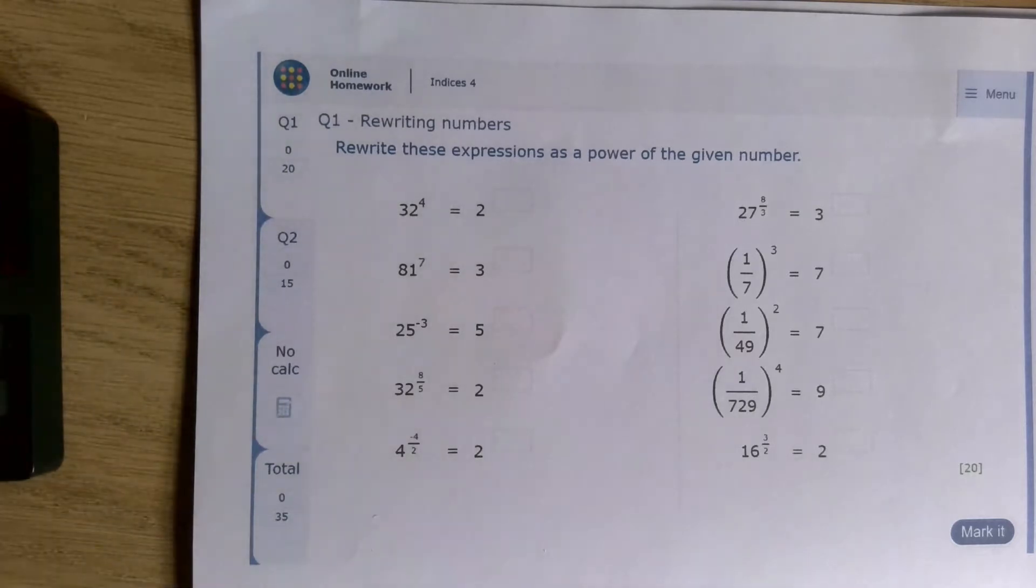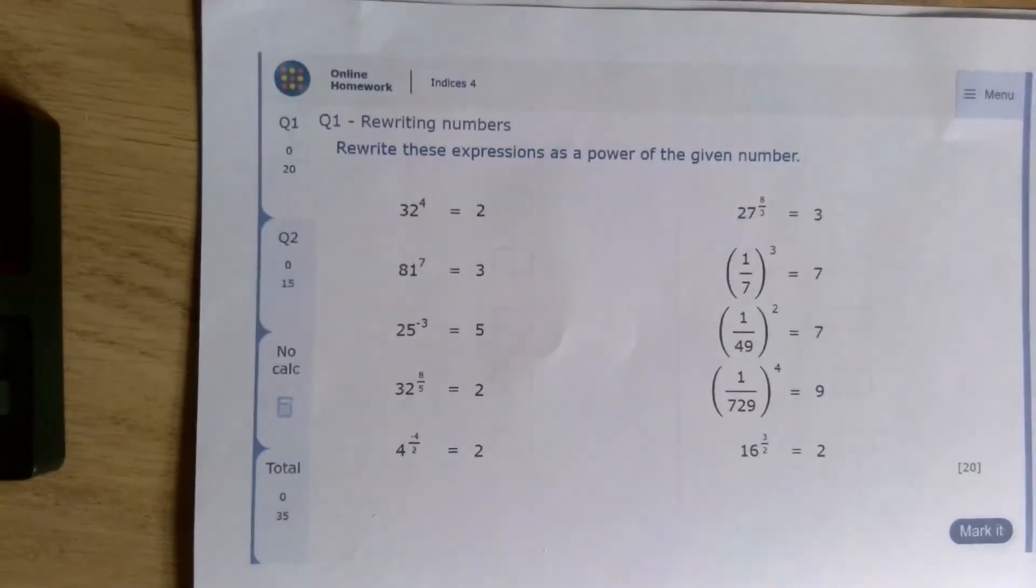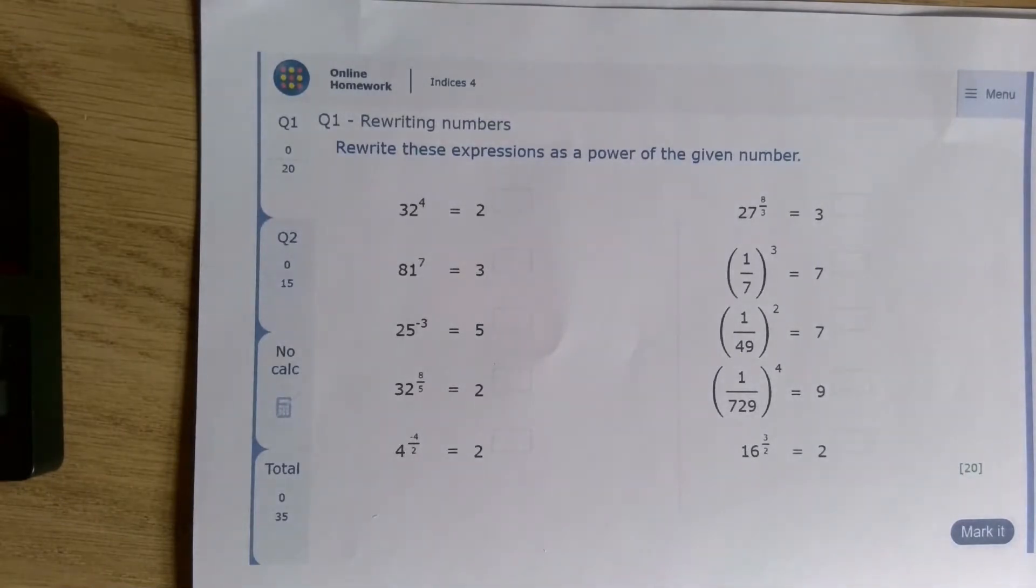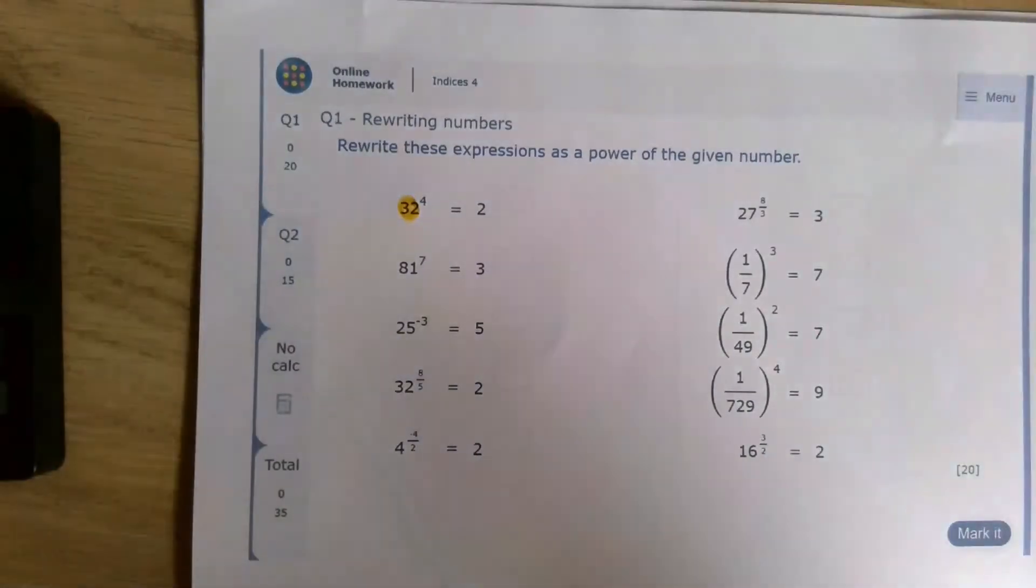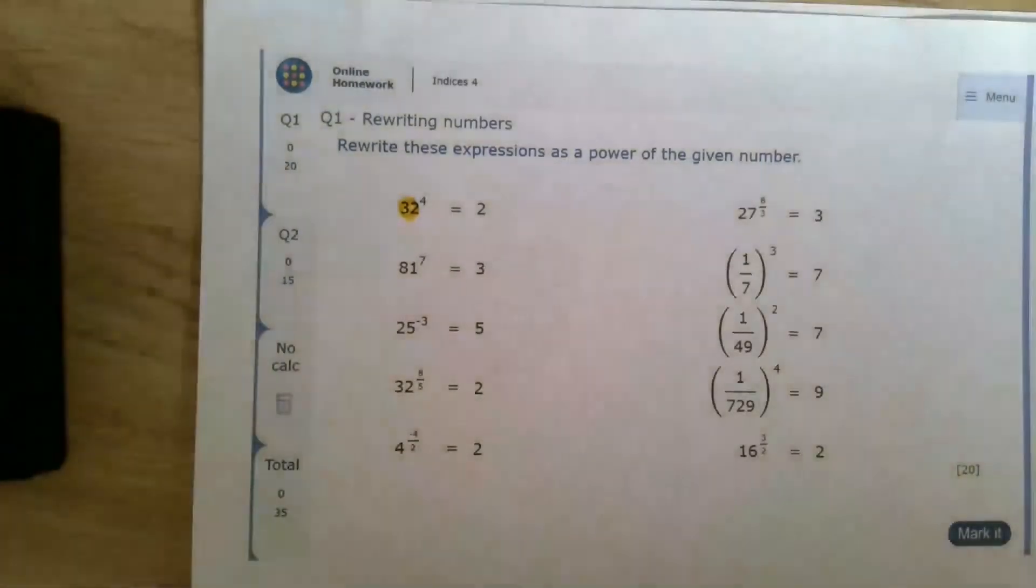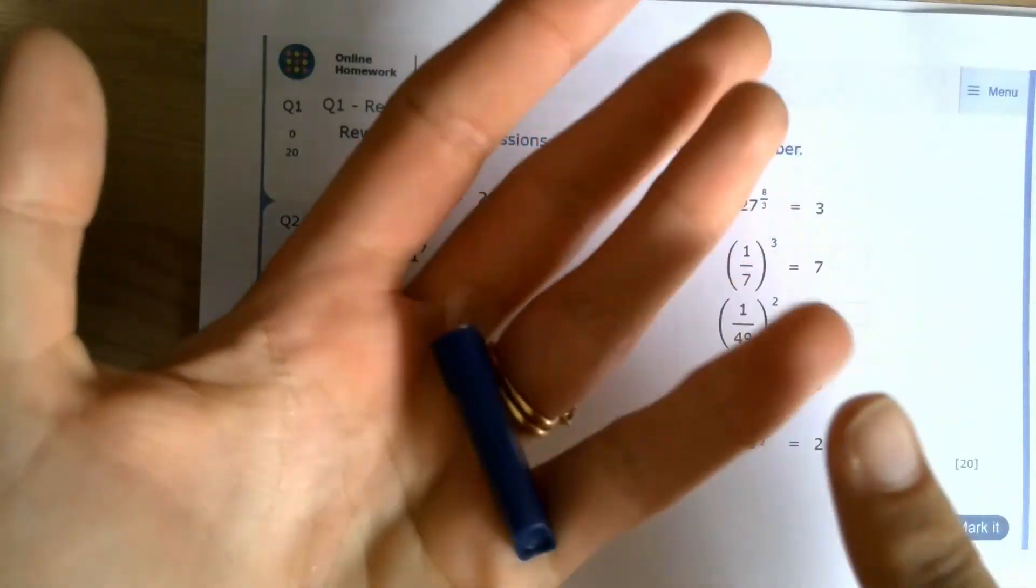When we've got rewriting numbers as a power of a lower base, we can do two things. We can either make the number larger and then find the smaller root, or we can make the number smaller, which is much easier. Unless you want to start dealing with 32 to the power of 4, I'm going to do it my way. So I take 32 and I think about what is 32 as a power of 2. So I've got 2, 4, 8, 16, 32.